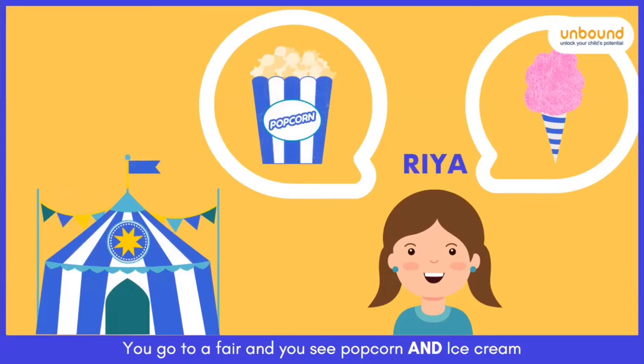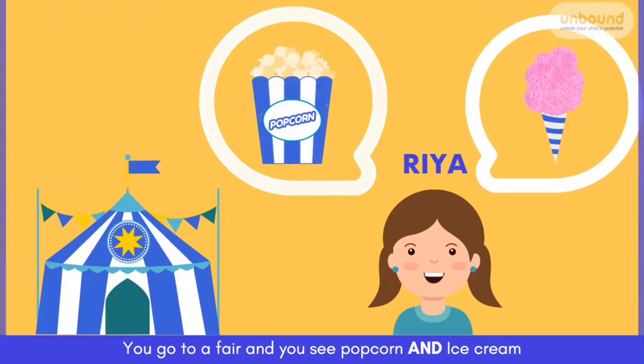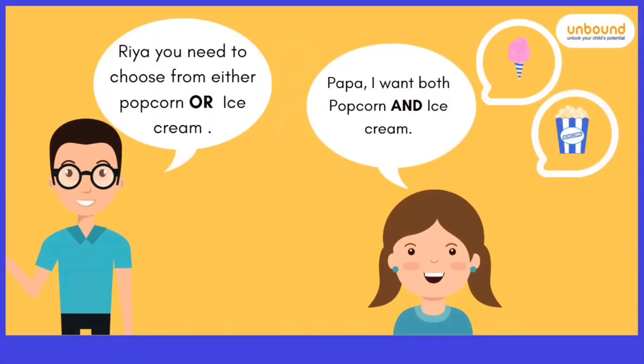Here's a girl named Rhea. She goes to a fair with her parents and sees popcorn and ice cream in a shop. She is now requesting her father to buy both popcorn and ice cream. I am emphasizing on and. As you know, and is a conjunction in English, right?